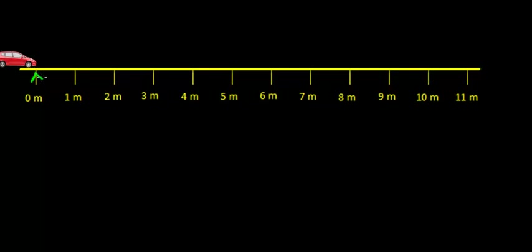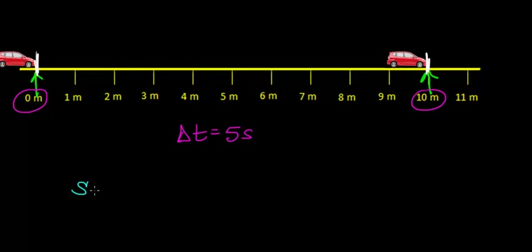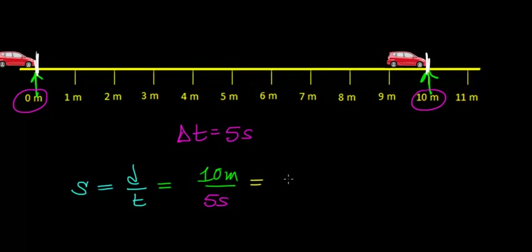Let's do an example. Suppose a car starts at the origin and travels to another point. I'll measure the distance from the same point on the car — in this case, from the front of the car. It takes 5 seconds to travel this distance, so the change in time is 5 seconds. Using the definition of constant speed — distance divided by time — the car travels a total distance of 10 meters in 5 seconds, giving a speed of 10 ÷ 5 = 2 meters per second.